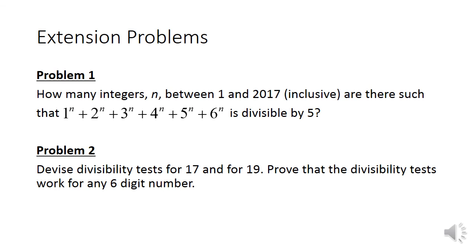Here are today's extension problems. Problem 1. How many integers n between 1 and 2017 inclusive are there such that 1 to the power of n plus 2 to the power of n plus 3 to the power of n plus 4 to the power of n plus 5 to the power of n plus 6 to the power of n is divisible by 5. Problem 2. Devise divisibility tests for the numbers 17 and 19. Prove that these divisibility tests work for a six-digit number.